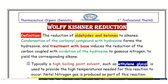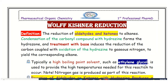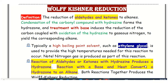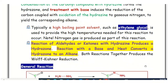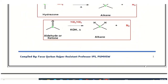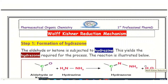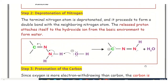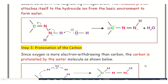The high-boiling solvent used in the reaction is ethylene glycol. The different steps involved in the Wolff-Kishner mechanism are: step one — formation of the hydrazone; step two — deprotonation of the terminal nitrogen of the hydrazone; step three — protonation of carbon, because in step two a carbanion was formed that is protonated by the water molecule.